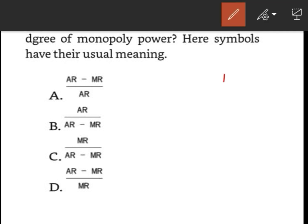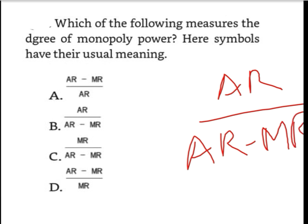The question says which of the following measures the degree of monopoly power. Monopoly power is always the reciprocal of elasticity of demand, that is AR minus MR divided by AR. AR means price, so our answer will be A, that is AR minus MR divided by AR.